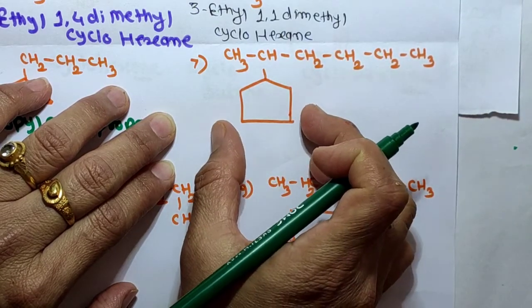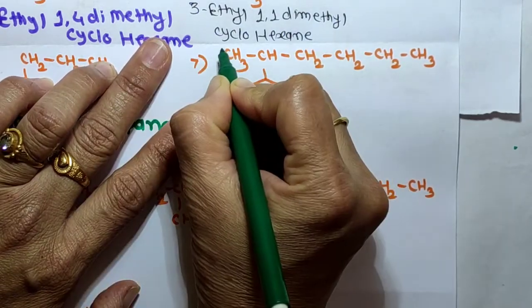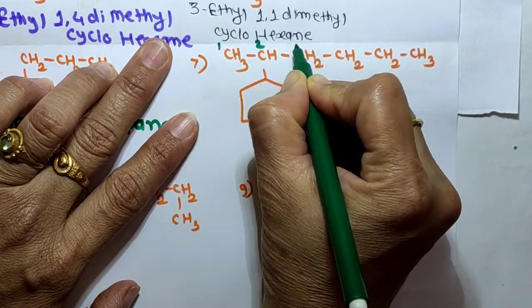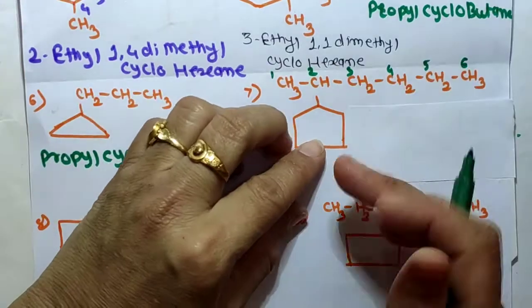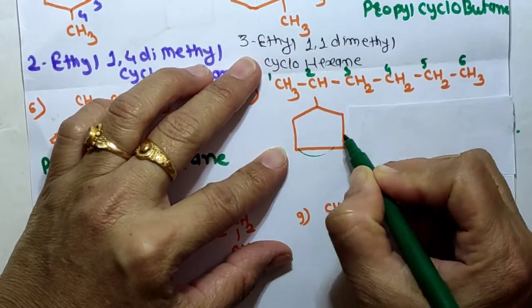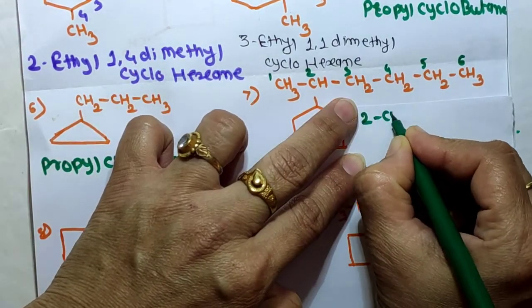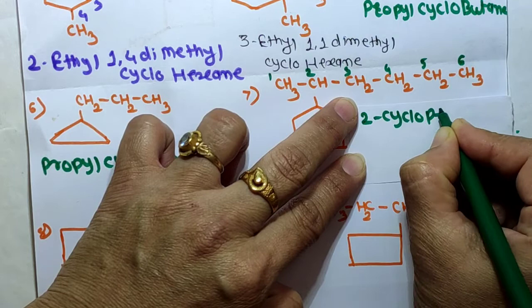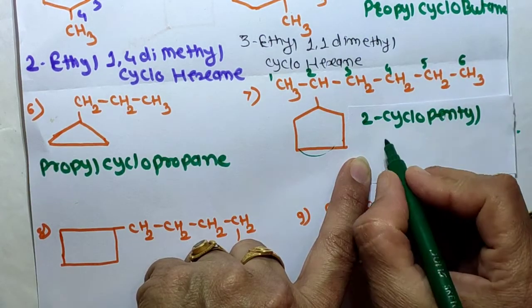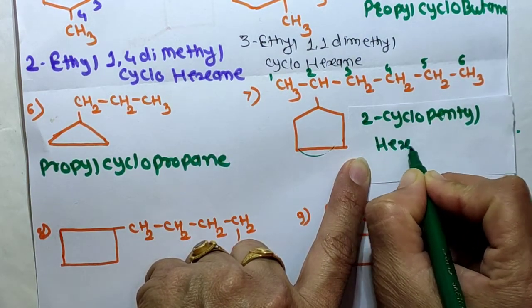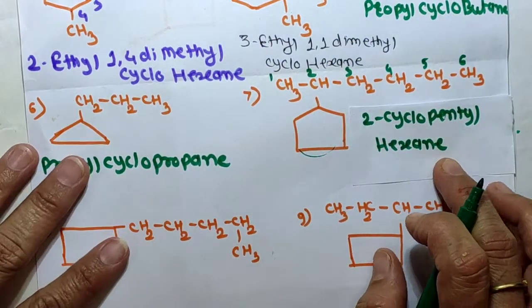Because there are 5 carbon atoms in the ring and 6 carbon atoms in the chain, the ring acts as a substituent. We start numbering from the left-hand side: 1, 2, 3, 4, 5. The ring is attached at position 2, and the ring is a cyclopentyl group. The 6-carbon chain is hexane. Therefore the name of this compound is 2-cyclopentylhexane.